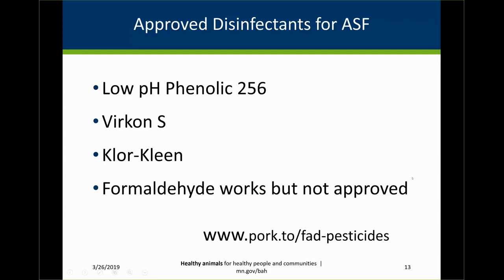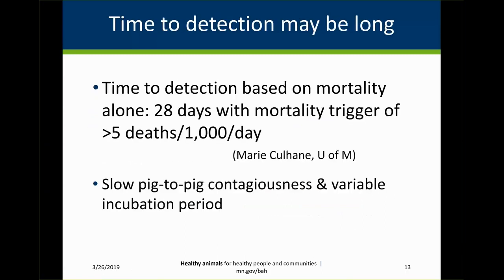There are some disinfectants that will work against it. Virkon is perhaps the most commonly used, but you have to use it exactly as directed in order for it to be effective — it's a very difficult organism to kill. Combined with the fact that it's a slow pig-to-pig contagious disease with a variable incubation period, it might take a long time to detect. Dr. Culhane at the University of Minnesota has found it might take 28 days from the time viral infection begins until it's discovered, using a mortality trigger of more than five deaths per thousand pigs per day.